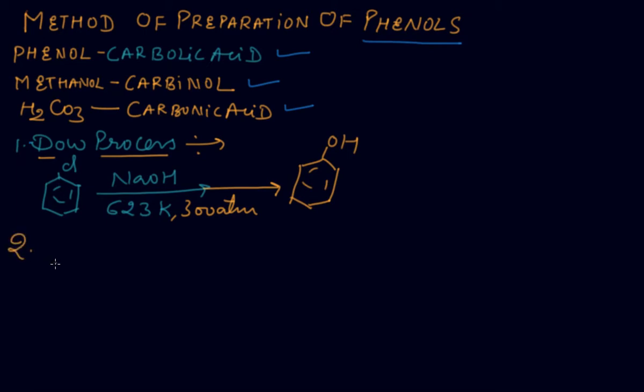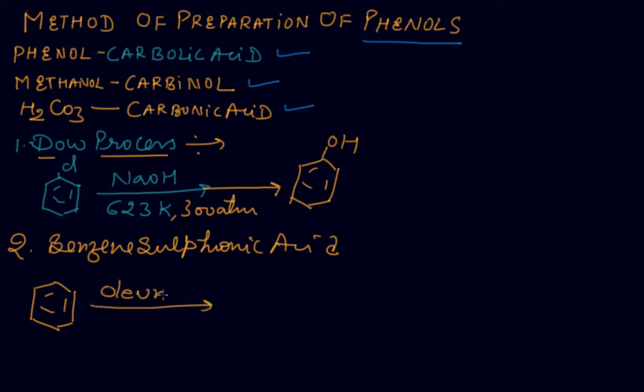Number two method is from the benzene sulfonic acid. First we will take here benzene and benzene is reacted with the oleum that is H2S2O7. Oleum you come to know in the P block also. This will give you benzene sulfonic acid SO3H.